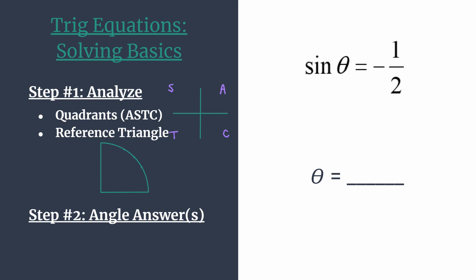For our problem, we know we're looking for angles where sine is negative one-half. Since sine is positive in quadrants one and two, we must be working in quadrants three and four. Let's sketch in some angles here so that we remember our answers are in quadrants three and four. Next, we're going to determine which reference triangle we're working with, so we want the triangle where sine equals one-half — working in quadrant one just to get the correct angle first.